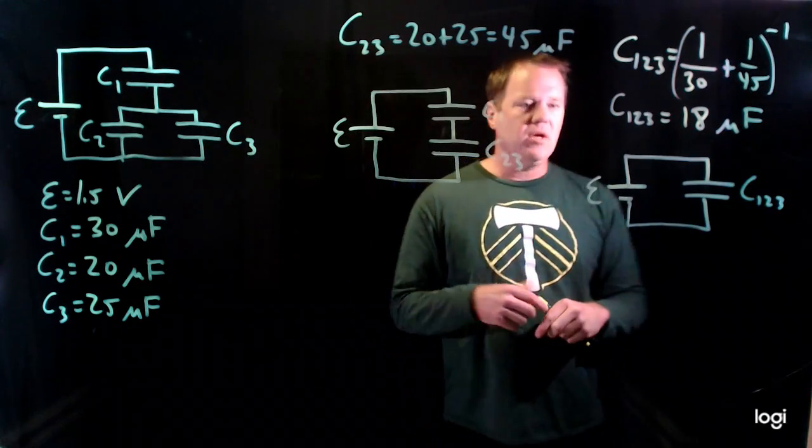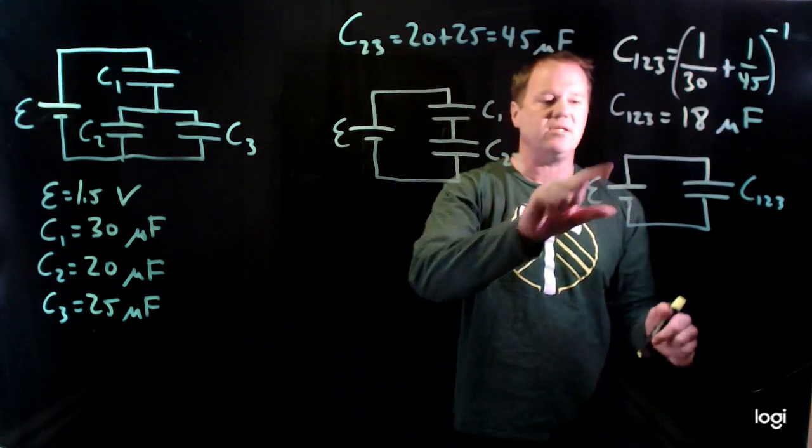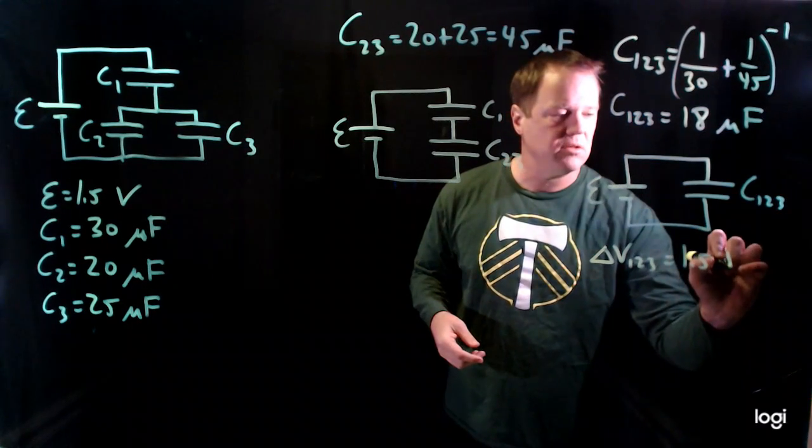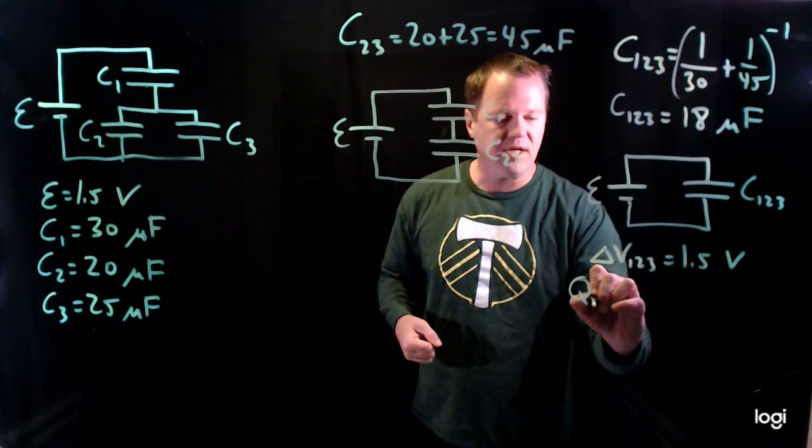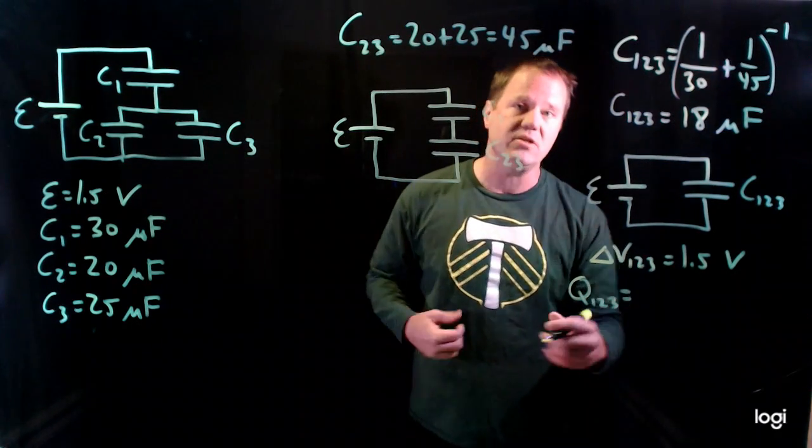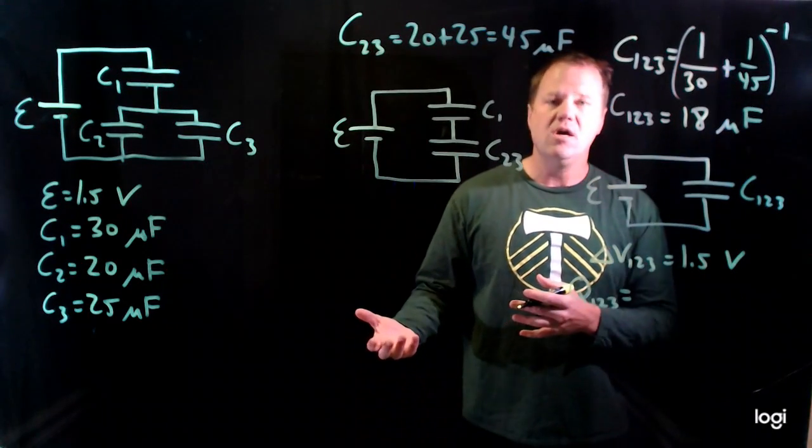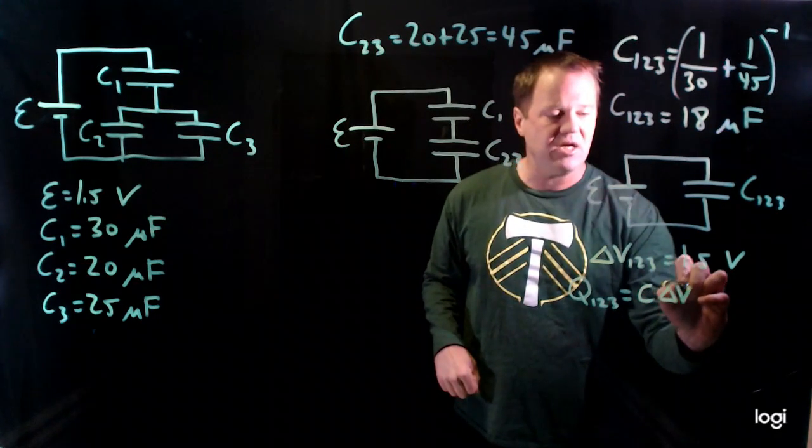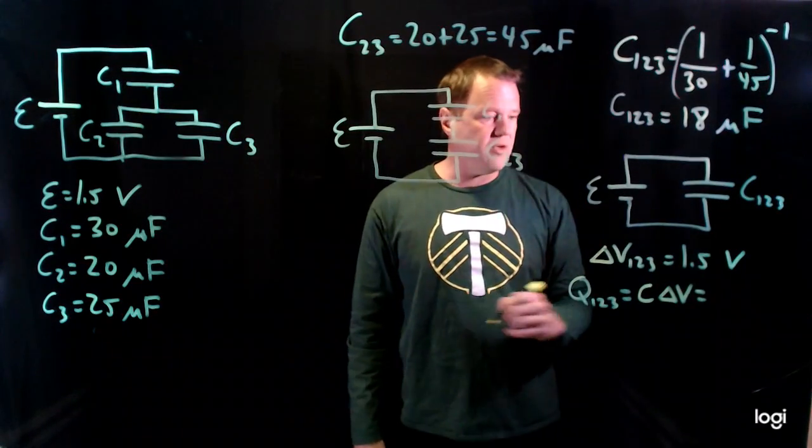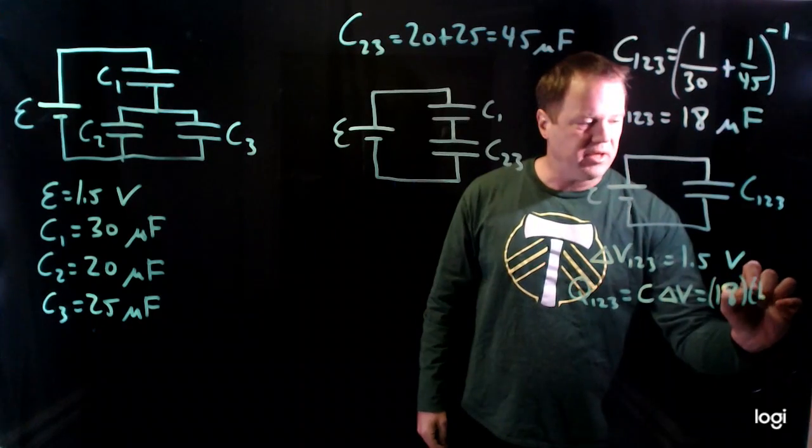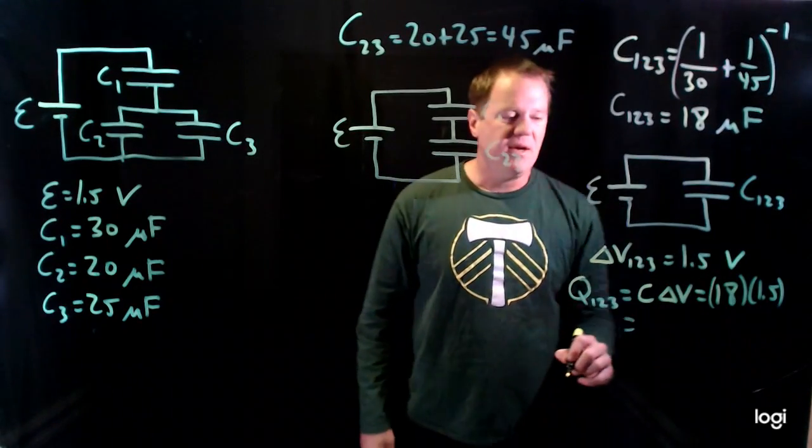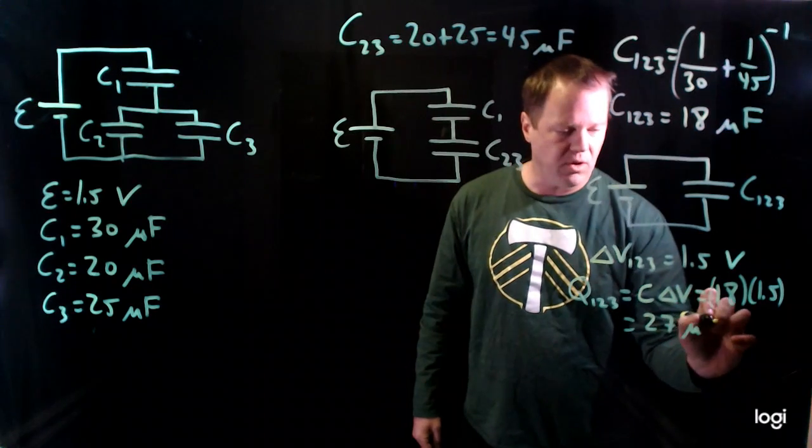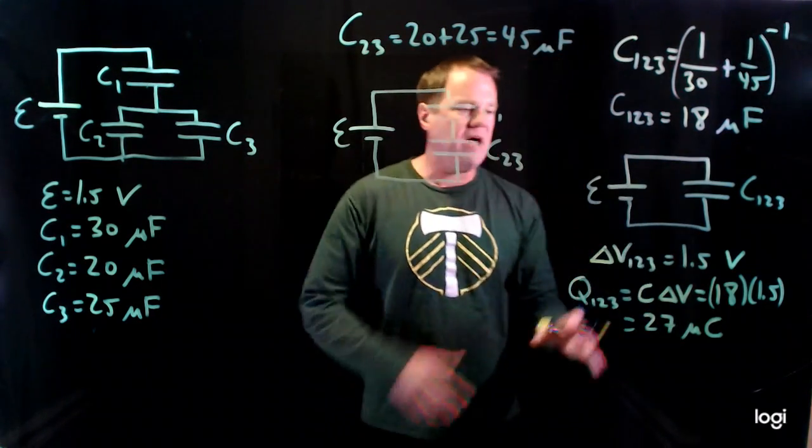So let's solve this one. So the potential difference across will just be the 1.5 volt. So that's easy. We'll go ahead and write that down though. Potential difference 123 is simply the battery potential difference. And then the charge, we have to calculate using the definition of capacitance. So definition of capacitance kind of takes the place of Ohm's law for capacitors. And if we solve it for charge, we get that it's the capacitance times the potential difference. So throwing in those numbers, I'm using non-SI units here, so you have to be a little bit careful. But 18 microfarads times 1.5 volts will give us 27 microcoulombs.